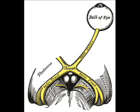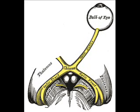The optic nerve is ensheathed in all three meningeal layers — dura, arachnoid, and pia mater — rather than the epineurium, perineurium, and endoneurium found in peripheral nerves. Fiber tracts of the mammalian central nervous system, as opposed to the peripheral nervous system, are incapable of regeneration, and hence optic nerve damage produces irreversible blindness.